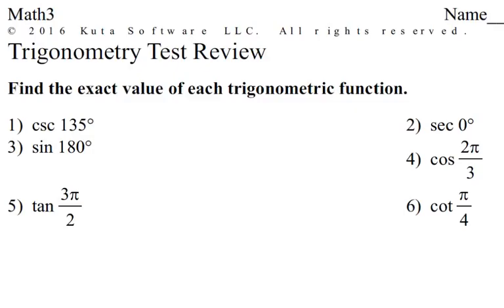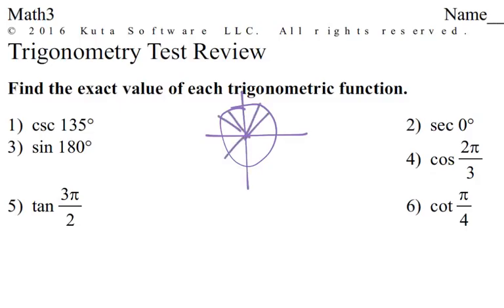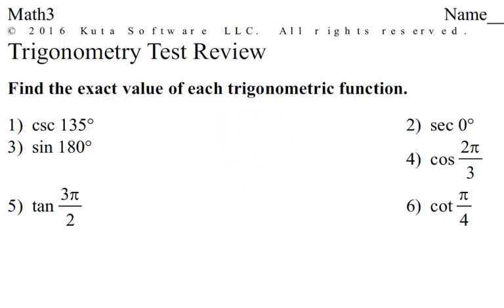Here we are with our trigonometry test review. These first ones were just finding the exact value of the trig function. To do that, we need our table or that unit circle. The unit circle had all the information we needed for those different angles, which we made into a table. We simply look up what it is in degrees or radians and deal with it.